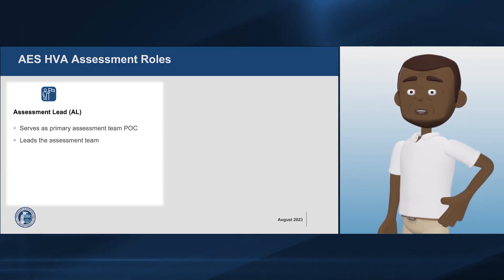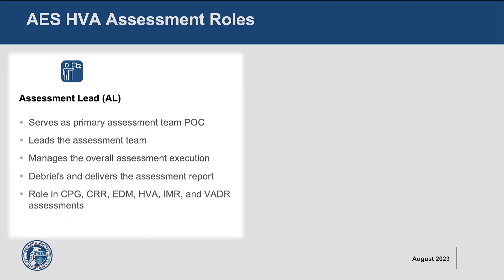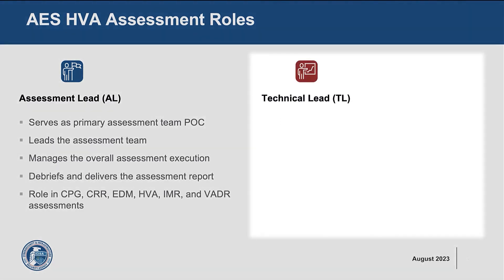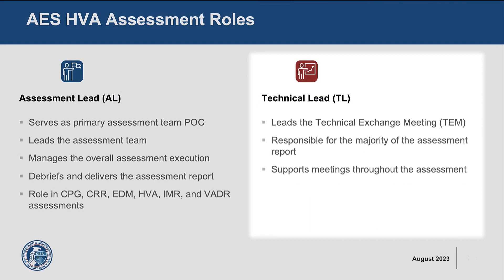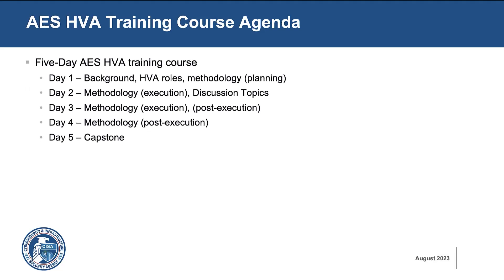Take a moment and review the AES HVA assessment roles. The AES HVA is a five-day course. Here's the agenda. Day one: background, HVA roles, methodology, planning. Day two: methodology, execution, discussion topics. Day three: methodology, execution, post-execution. Day four: methodology, post-execution. Day five: capstone.